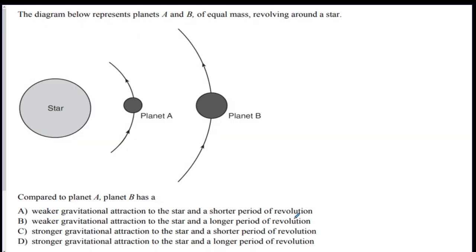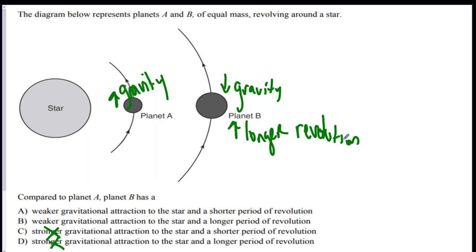Compared to planet A, planet B has what? This is Kepler's second law. And his third law, sort of, combined in the same question. So the closer you are to the star, the more gravity. So planet A is going to have more gravity. So which ones can we get rid of? Planet B has less gravity. So C and D are out. And now we say they want to know about period of revolution. The further away the planet is, the longer it takes. So planet B is further away. So this is going to take longer time to go around. So B is the right answer on this one.